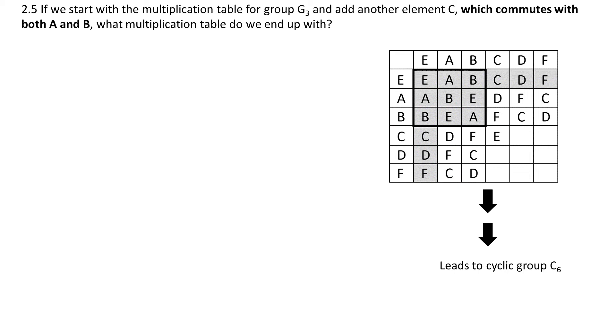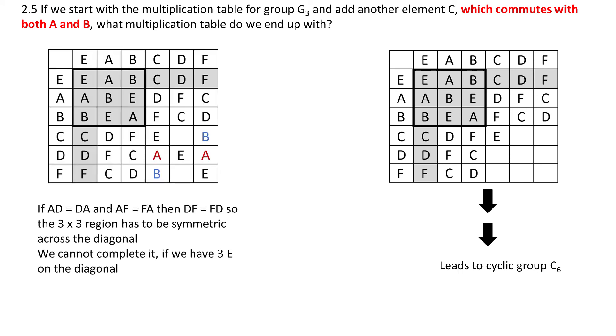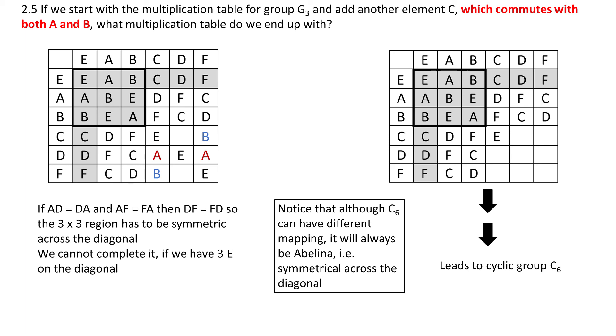Lastly, please notice that although we didn't intend to do so, we actually addressed the part of the question which says which commutes with both A and B. Just a quick note, it is of course impossible to construct a symmetric table with four identity elements on the diagonal. Also notice that for C6, or any group of that matter, we can have different mappings and the Cayley table might look different, but it should maintain its overall symmetric properties. That is, if a group is abelian, all mappings of the group will be abelian and the table will be symmetric across the diagonal. Analogically, if the group is non-abelian, all the different mappings will be asymmetric across the diagonal.